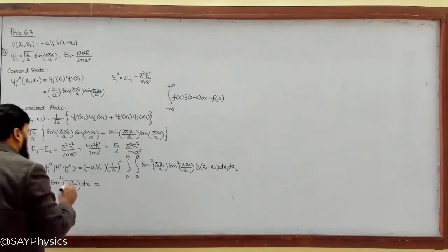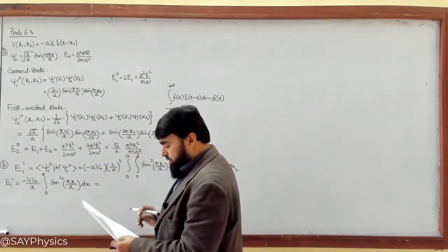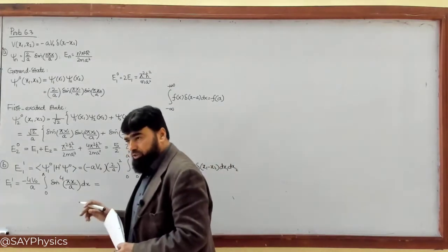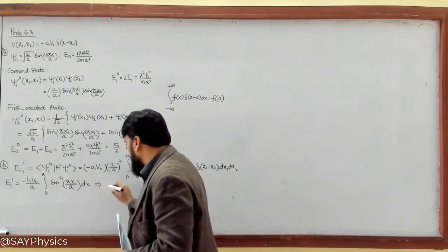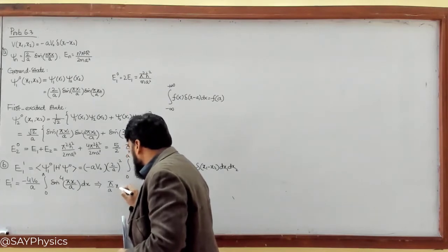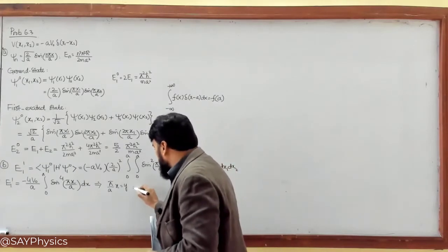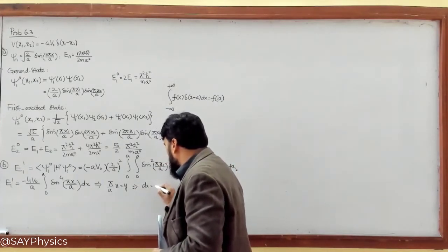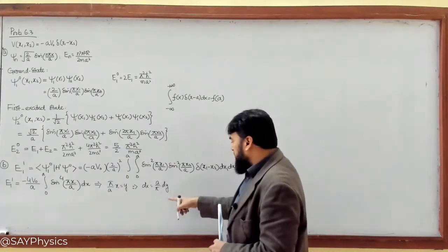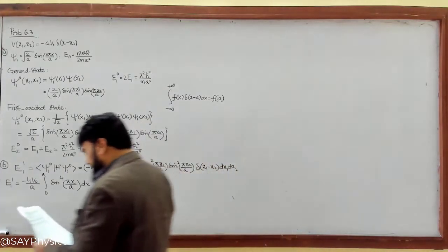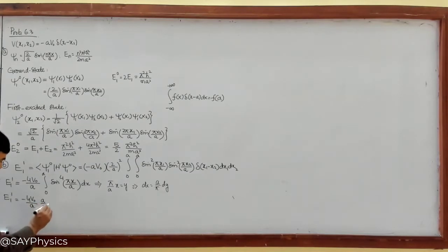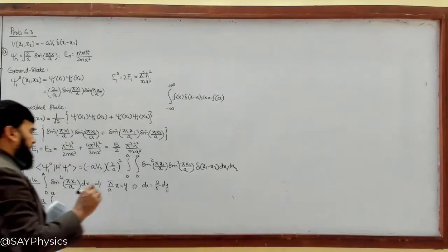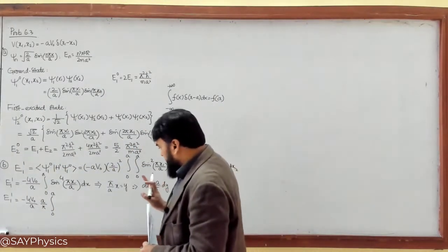From the table of integrals, if we do a little bit of substitution — suppose πx/a equals y — then dx will be equal to a/π times dy. So E11 equals minus 4v₀/a, and then a/π times the integral. The limits are the same from 0 to a, but they will change: when x is 0, y is 0, and when x equals a, y equals π.